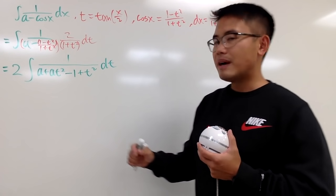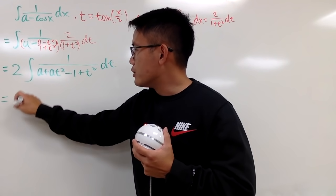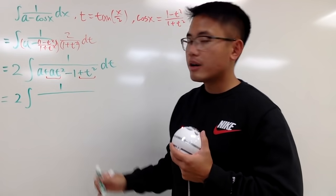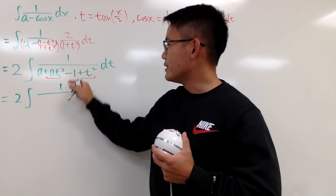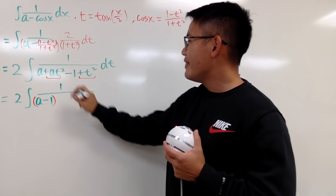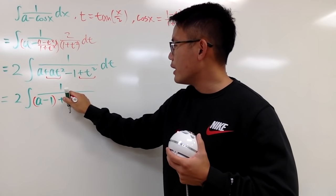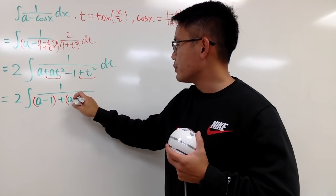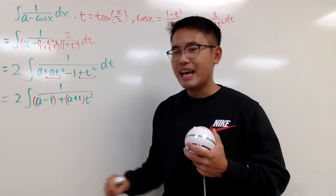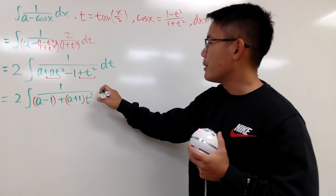We now have 2 times the integral of 1 over the denominator. Combining the constant terms gives (a - 1), and factoring out t² gives a coefficient of (a + 1). So the denominator is (a - 1) + (a + 1)t², and we can see the inverse tangent situation is about to show up.